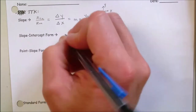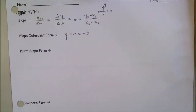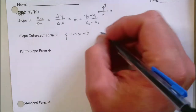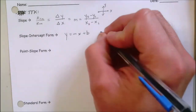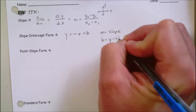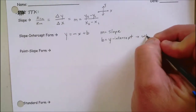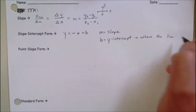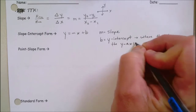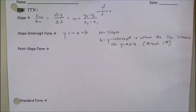For slope-intercept form, the reason we call it that is because it involves both the slope and the y-intercept. This is the equation we most often like our equations in — it's easily graphed. m is equal to the slope and b is the y-intercept. Remember, the y-intercept is where the line crosses the y-axis. Don't forget to always graph the y-intercept first.